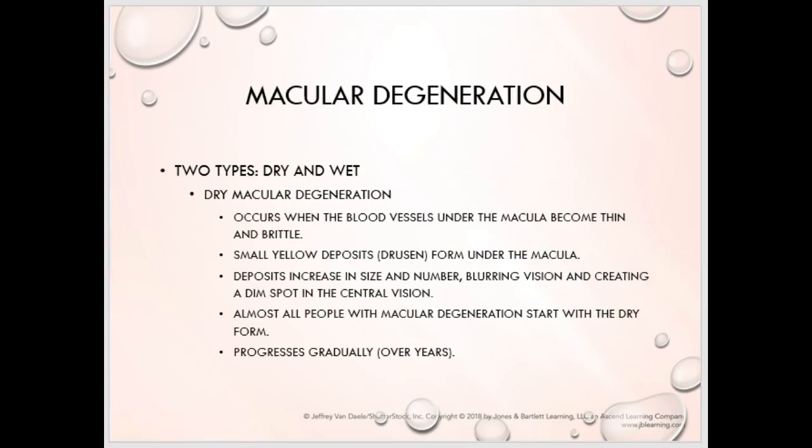Macular degeneration has two types: dry and wet. With dry, the blood vessels going to the macula become thin and brittle and/or occluded — atherosclerosis or arteriosclerosis is one of the issues. This may lead to small yellow deposits that form under or around the macula called drusen. Those depositions increase in size and number, eventually leading to blurred vision or a dim spot in central vision, because the macula and fovea have the highest concentration of cones.